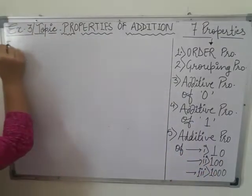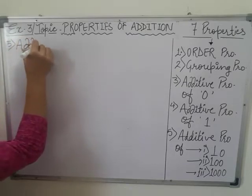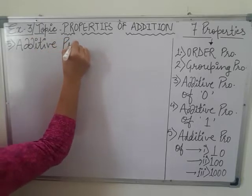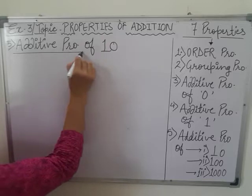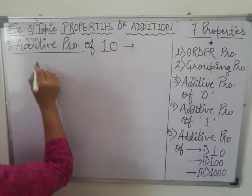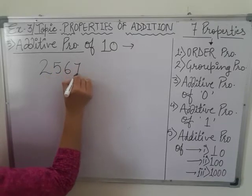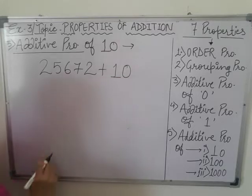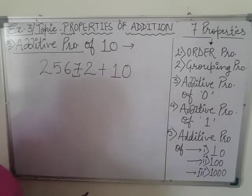Additive property of 10. According to this property, if we are adding 10 to any large number, then the change only on the 10th place digit.